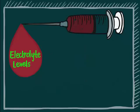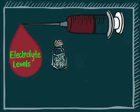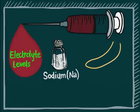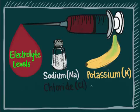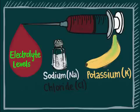Electrolyte levels. Some examples of electrolytes include sodium, potassium, and chloride. Electrolytes are tightly regulated in your body, and abnormalities in the levels of electrolytes can indicate problems.